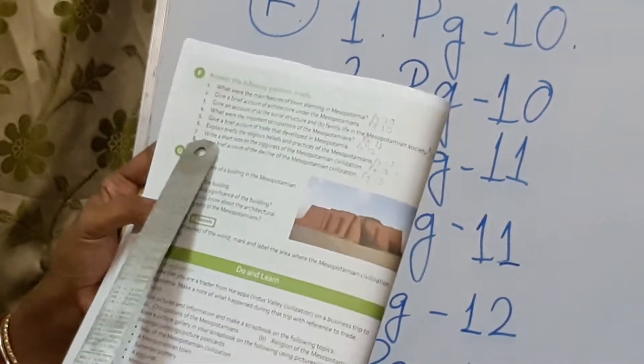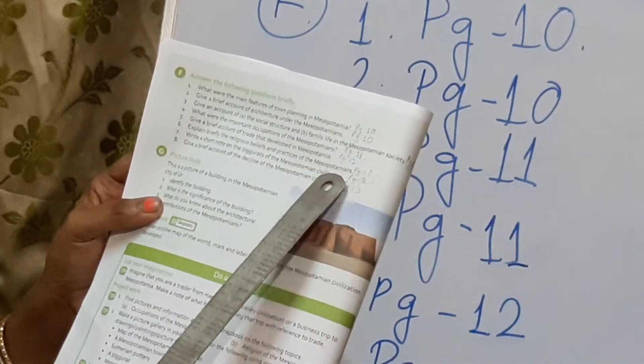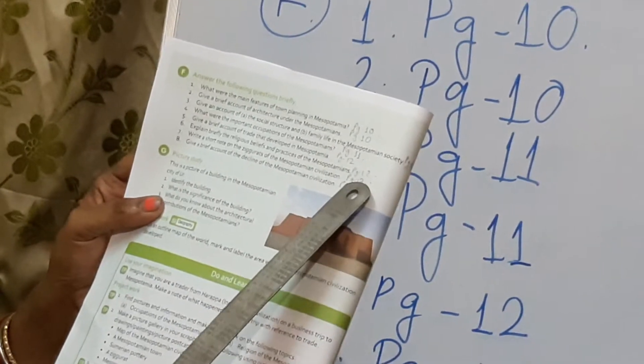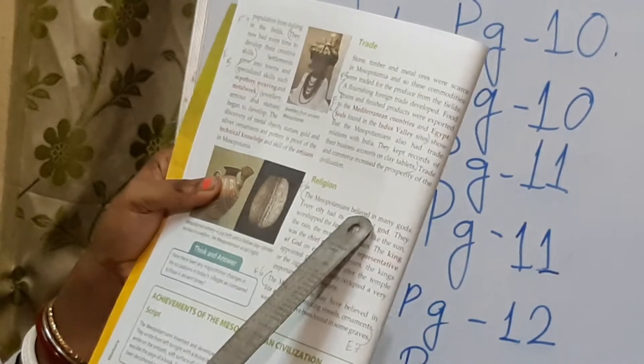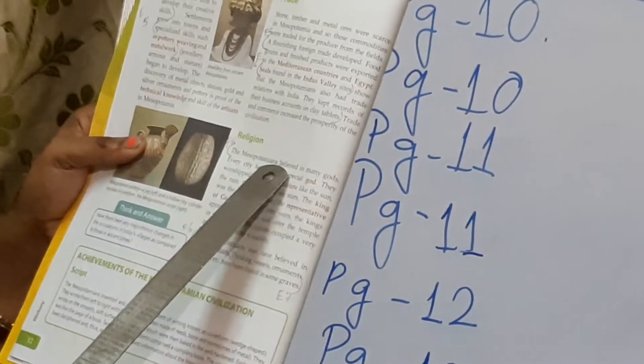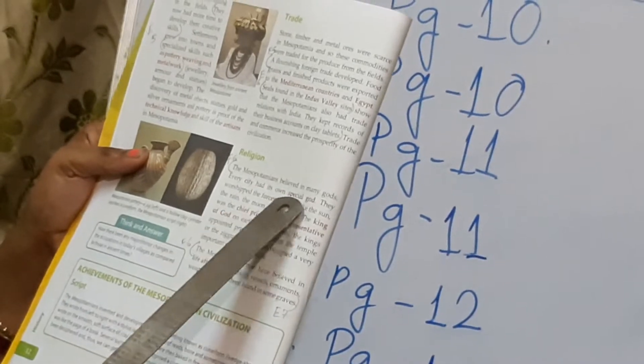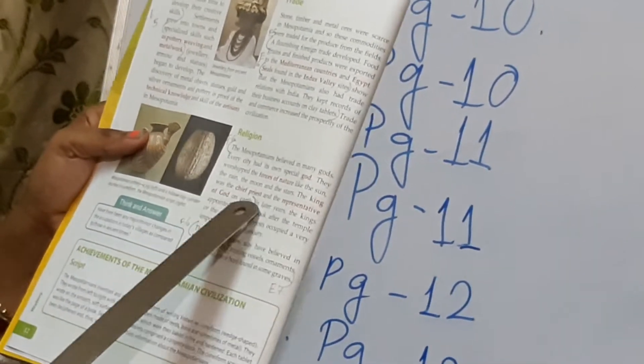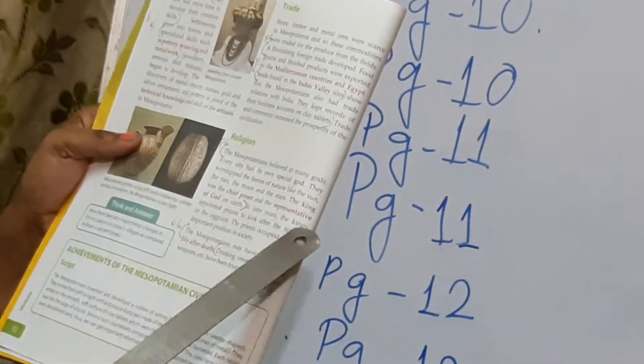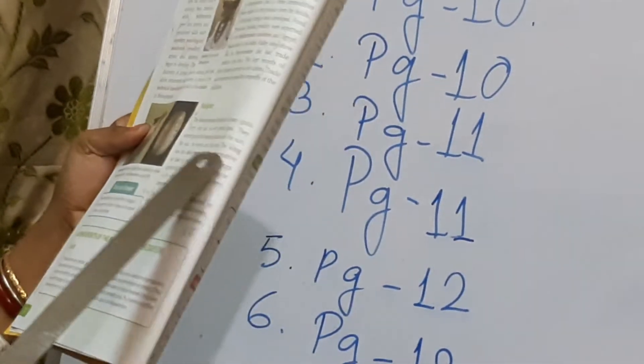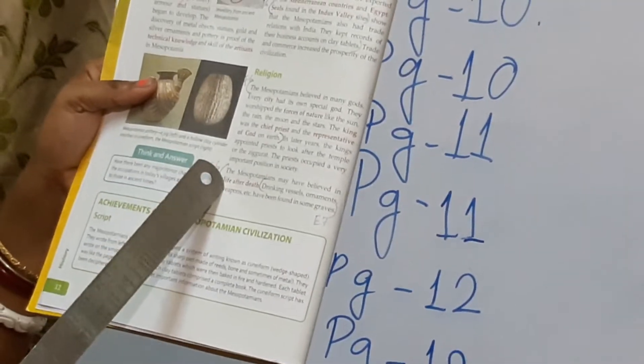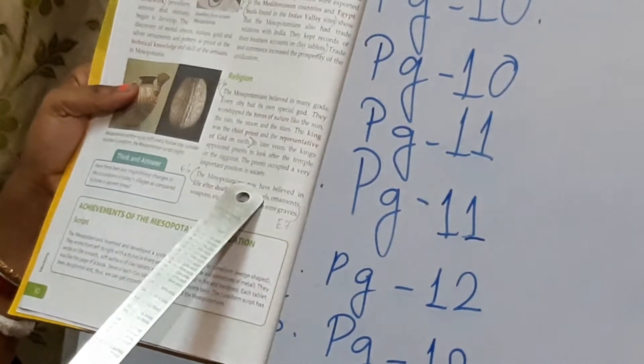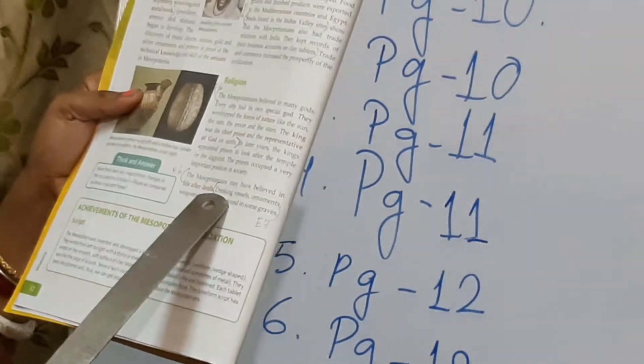Then question number 6. Explain briefly the religious beliefs and practices of Mesopotamians. This also you look in page number 12. Religious practices and religion. Here you will start from the Mesopotamians believed. Under the religion heading, the Mesopotamians believed in many gods. Every city had its own special god, ending till the king was the chief priest and representative of God on earth. Up to earth you will write.